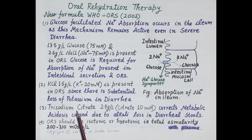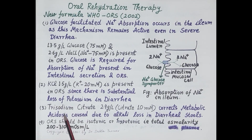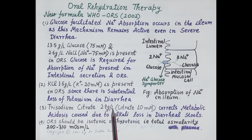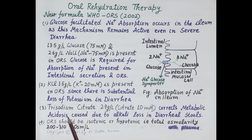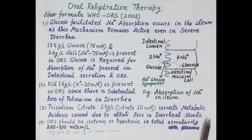In diarrhea, loss of alkali in the stools causes acidosis. This metabolic acidosis is corrected by the addition of trisodium citrate at 2.9 g per liter of water, giving a citrate concentration of 10 mmol per liter in the ORS. So trisodium citrate corrects metabolic acidosis caused by the loss of alkali in diarrheal stools.